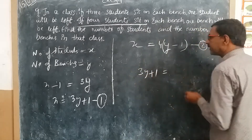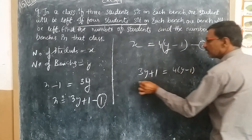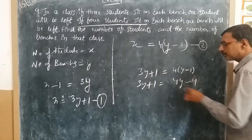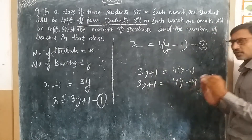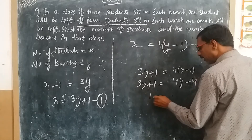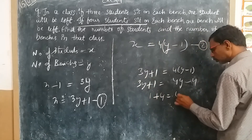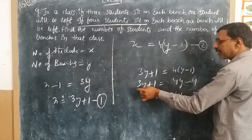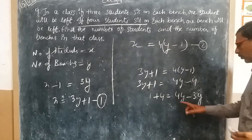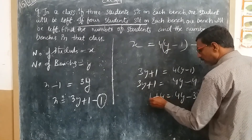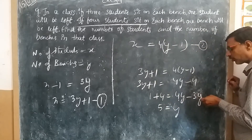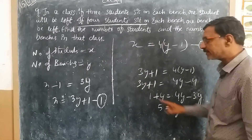From the two equations: 3y plus 1 is equal to 4 times (y minus 1), so 3y plus 1 equals 4y minus 4. By transposing variables, y equals 5.